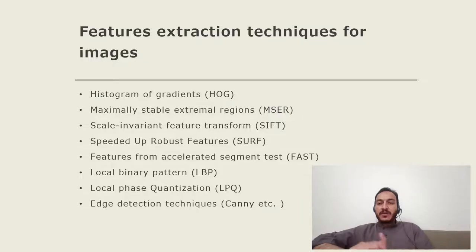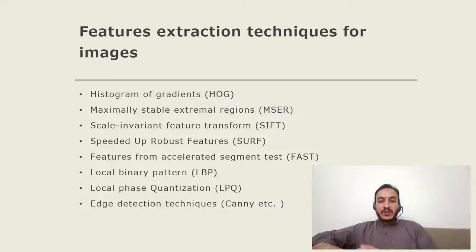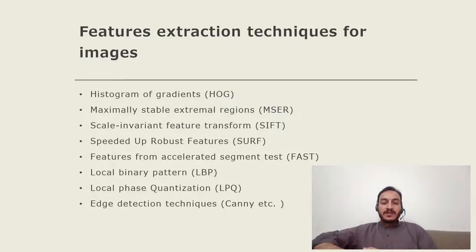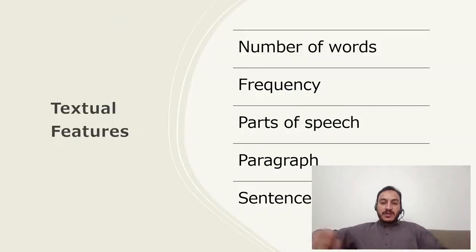So whenever you see those names anywhere, you will know that these are feature extraction techniques for different data types. For images, we have HOG, MSCR, SIFT, SURF, FAST, LBP, LPQ, and different edge detection techniques like Canny, etc.